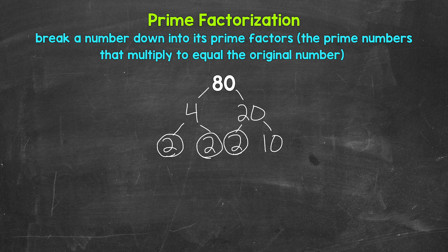But we can continue to break 10 down. So we need factors of 10. Well, 2 and 5 are factors of 10. So let's break 10 down into 2 and 5. 2 and 5 are both prime numbers, so we are done here and here.